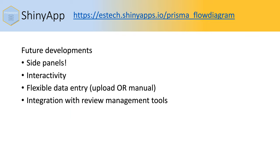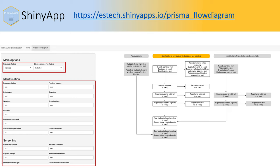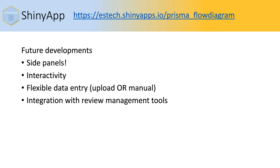Some future developments include adding the side panels — the blue side panels aren't currently working because Shiny doesn't support JavaScript. We also want to build in interactivity so that you can click on nodes and be sent to URLs, flexible data entry so that you can either upload a CSV from the template or use manual data entry, and integration of the flow diagram with review management tools so that data is automatically populated from whichever review management tool you use.